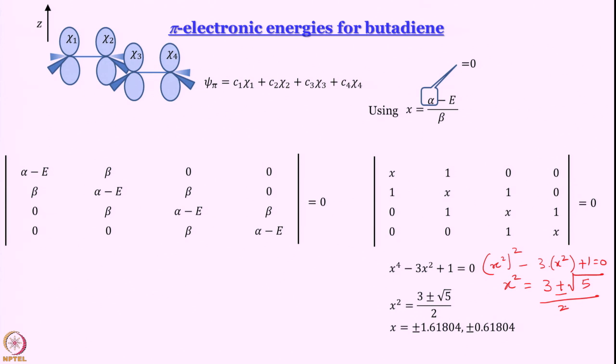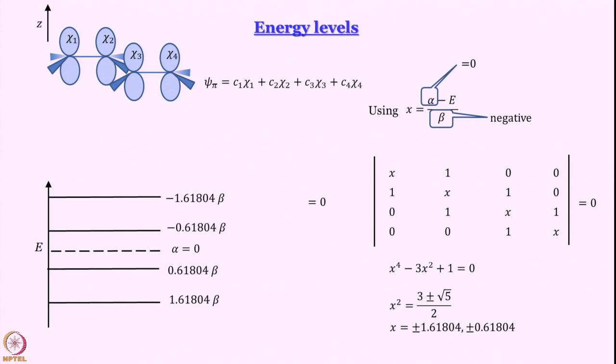Yeah. So if it is 1.61804, that is the energy in units of beta, keeping in mind that beta is a negative quantity. Now, with that understanding, we can draw the energy levels. We have not drawn the wave functions here, we will get there, but we have drawn the energy levels. The center here is alpha equal to 0, we start calculations from here. 0.61804 is really this separation.